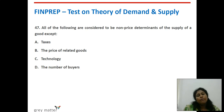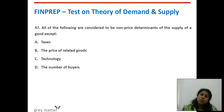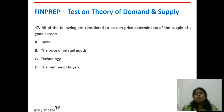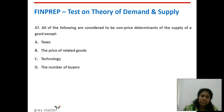Forty-seventh question: all of the following are non-price determinants of the supply of a good except which? Taxes do affect supply — more taxes increase cost of production. Prices of related goods affect supply — if related goods are priced higher, the supplier may produce more of those. Technology — if technology improves, supply increases; if obsolete, supply decreases. Number of buyers is purely a demand-side terminology and will not affect supply. Option D — number of buyers — is the right answer.